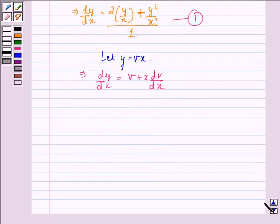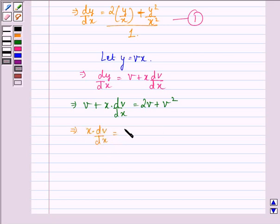We get v + x(dv/dx) = 2v + v². This implies x(dv/dx) = 2v + v² - v. This is equal to v² + v.